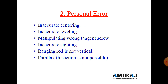The second type of error is personal error. As the name indicates, if any person makes a mistake while taking readings, the error generated is called a personal error. Main points include: inaccurate centering, inaccurate leveling, and inaccurate focusing. If a surveyor does not level or center perfectly, an error is generated. Other personal errors include manipulating one target screw, inaccurate sighting where the ranging rod is not vertical, and parallax where proper bisection is not possible.